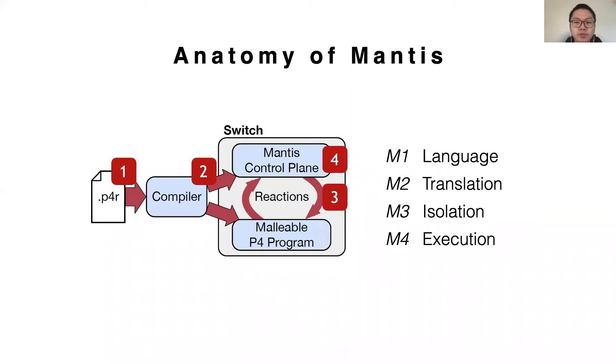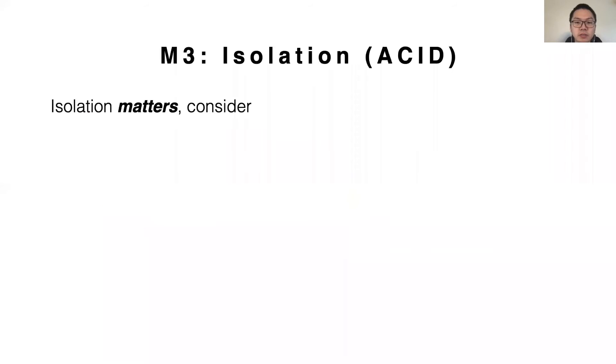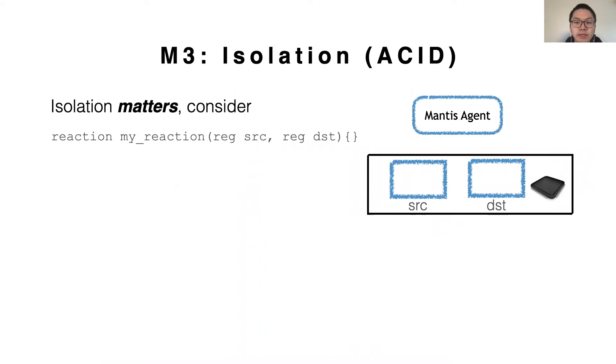Now we have seen how to translate a simple P4R program without considering isolation. I'm going to talk about additional challenges due to the concurrent execution of packet processing and reactions. To see why concurrency potentially causes issues, consider a reaction function that polls the source and destination addresses of a packet. A user might reasonably expect that the source and destination addresses in a single iteration of a reaction function will come from the same packet P1. However, without coordination, what could happen is that during the first poll it gets the value of source from packet P1, but then during the second poll it gets the value of destination for another packet P2.